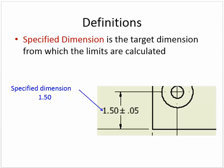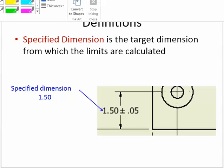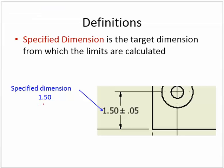The last thing we'll go over is the specified dimension. The specified dimension is the target dimension from which the limits are calculated. In this case, 1.5 is our specified dimension — that's what we're trying to get it to be. It can be off a little bit and still work, but ideally this is where we want it: 1.5.